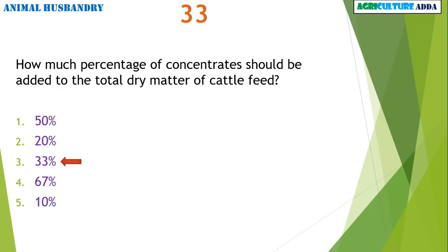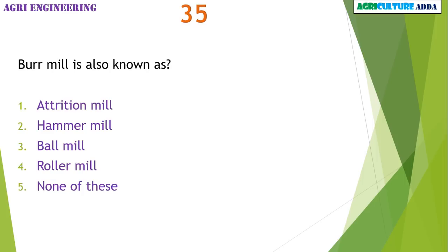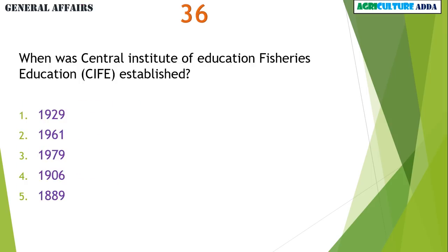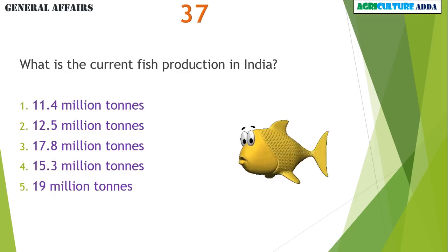How much percentage of concentrates should be added to the total dry matter of cattle feed? 33%. What is the vertical clearance of moldboard plough? 3 to 5 mm. Burr Mill is also known as Attrition Mill. When was the Central Institute of Fisheries Education established? 1961.